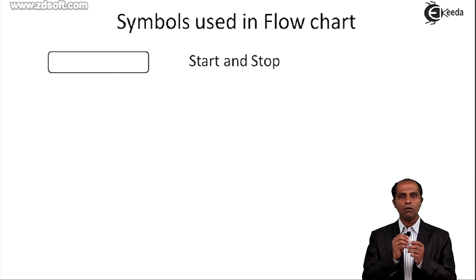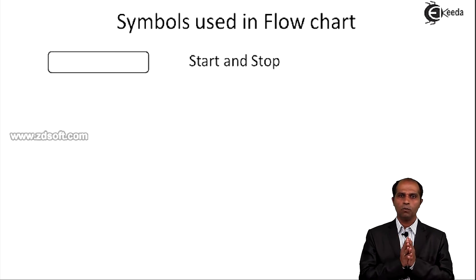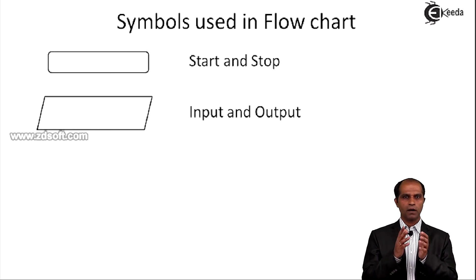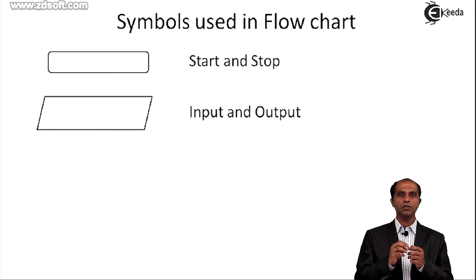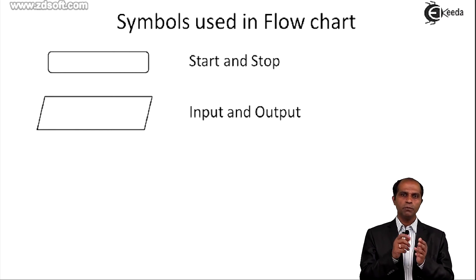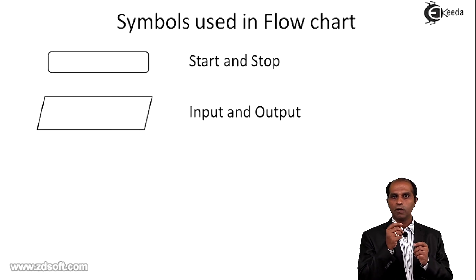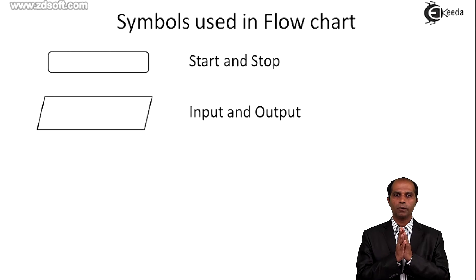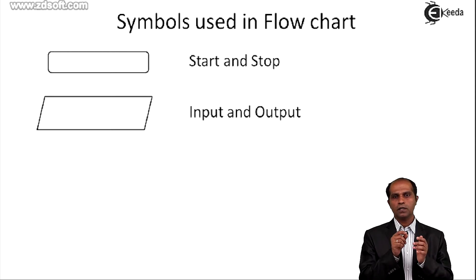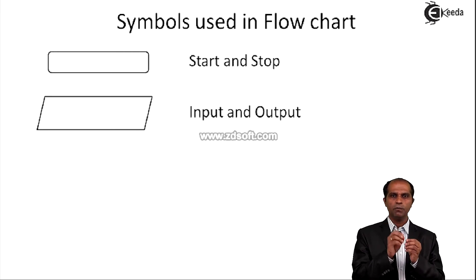The text written inside the rounded-edge rectangle describes whether it is start or stop. If the text says 'start', that symbol will have only an output arrow and no input. If the text says 'stop', it will have only an input arrow and no output. The next symbol is the parallelogram, used whenever you need to read input or display output. The same parallelogram can represent input or output depending on the text inside — using 'read' or 'input' makes it an input symbol, while 'display' or 'print' makes it an output symbol.